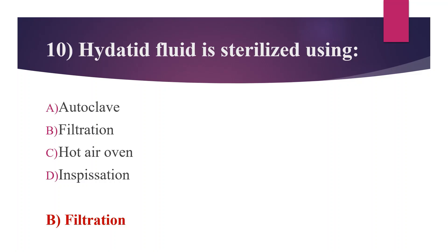Other options: In autoclave, the holding period is 121°C for 15 minutes at 15 psi. In hot air oven, the holding period is 160°C for 1 hour; it is used to sterilize glassware, forceps, scissors, scalpels, old glass syringes, swabs, and pharmaceutical products such as liquid paraffin, dusting powder, fats, and grease. Inspissation is used to sterilize LJ medium and Loeffler's serum slope, with sterilization at 80–85°C for 30 minutes on 3 successive days, using an instrument called an inspissator.